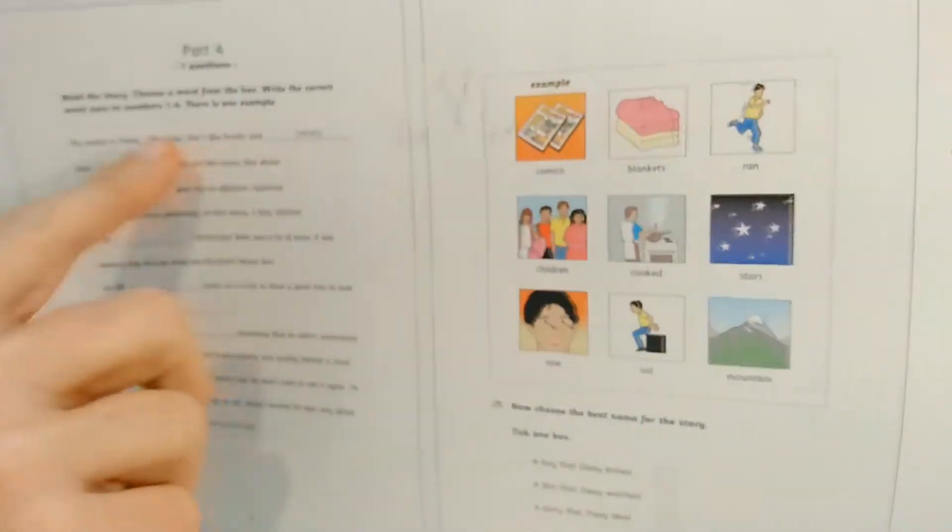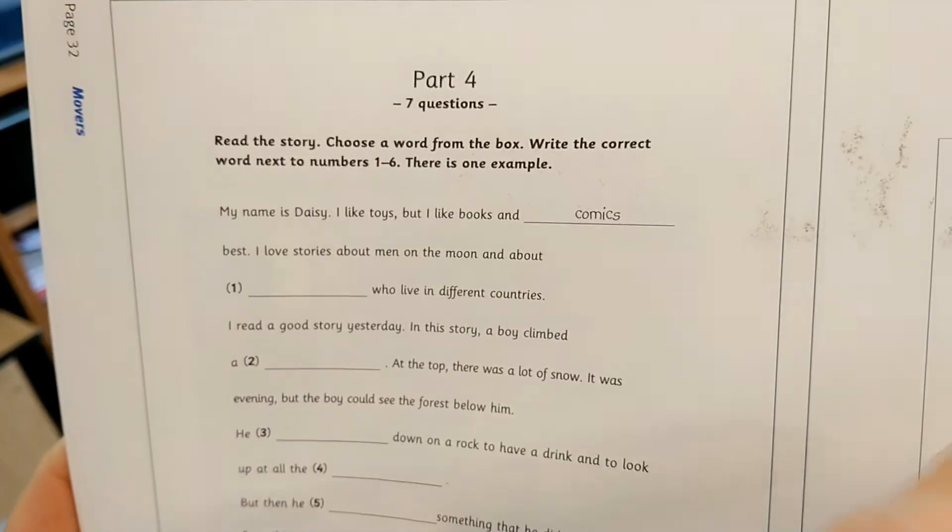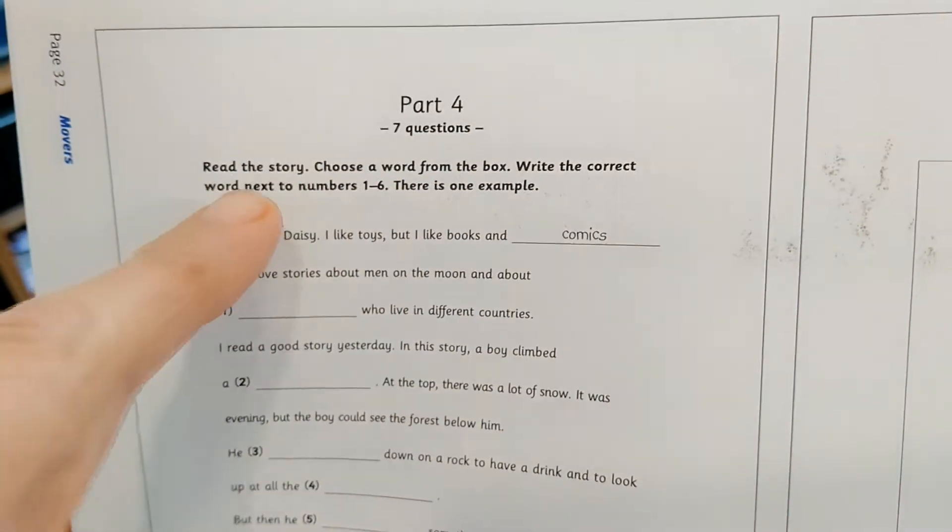Part four. You need to read the story. You choose a word from the box and you write the correct word next to the numbers. You see the numbers in the text?